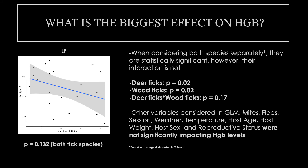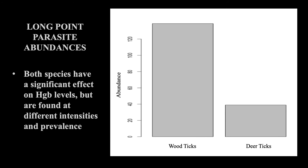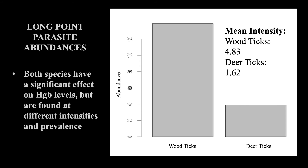Long Point produced the most interesting results. As the only site that has two species of ticks, it's not only the number of ticks in general affecting hemoglobin, but the number of ticks from each species. When both species are considered together, the number of ticks does not affect hemoglobin levels. However, when considered separately, both ticks on their own significantly impact hemoglobin levels, but their interaction does not. All other variables considered had no significant effect on hemoglobin levels. The abundance of wood ticks is far greater in general in Long Point — the mean intensity of wood ticks is nearly three times that of deer ticks, and over 93% of the mice in Long Point were infested with wood ticks, and 77% were infested with deer ticks. Despite the wood tick presence being greater than the deer tick presence, both species had a significant effect on their host's hemoglobin levels.